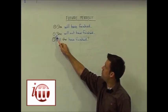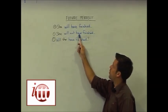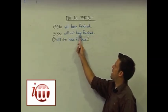In order to make the negative form, we simply add the word not between the word will and our helping verb have. She will not have finished.